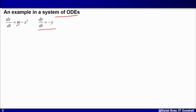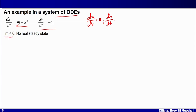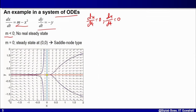To get a steady state for a system of ODEs, both dx/dt = 0 and dy/dt = 0 must hold simultaneously. When m < 0, there is no real steady state, as discussed before. When m = 0, the phase portrait shows the null clines intersecting at only one point, (0, 0), which is the single steady state.